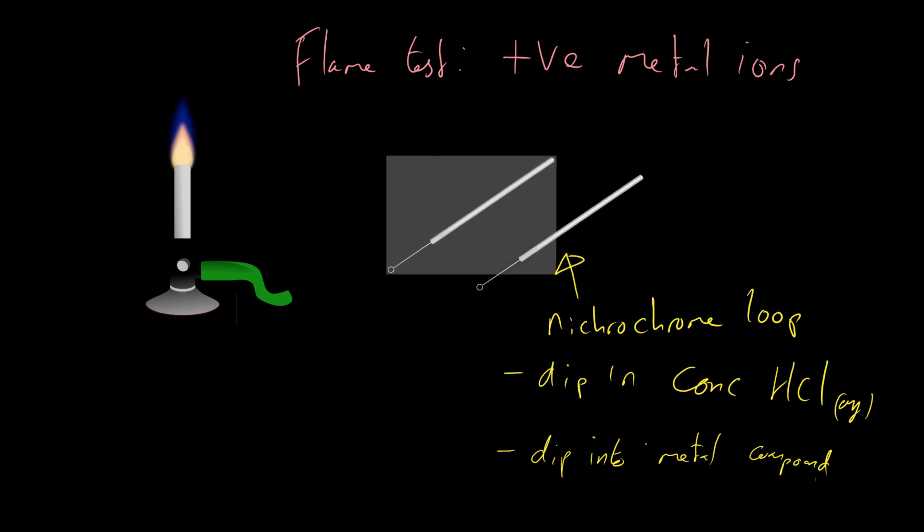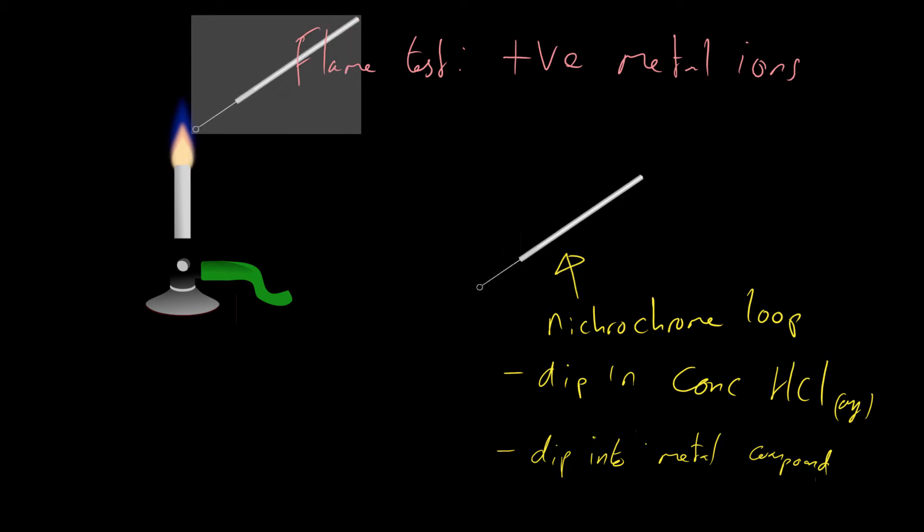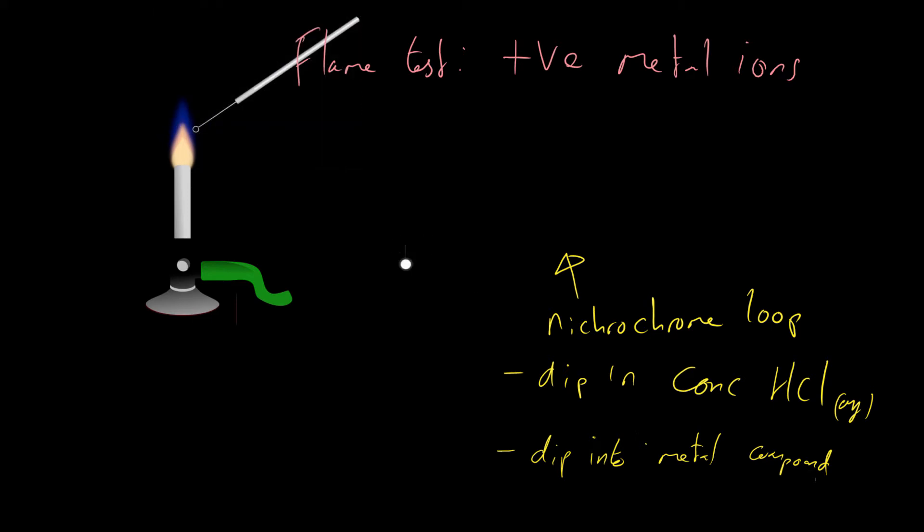What we then do is take the loop and hold it in a blue roaring flame. We hold it in the blue flame and you'll get a result. This blue flame is going to turn a different color depending on what metal ion you have.